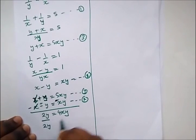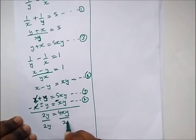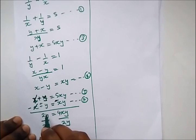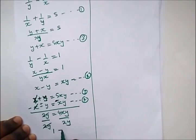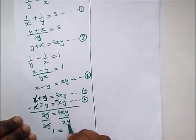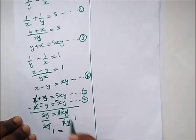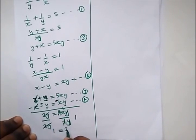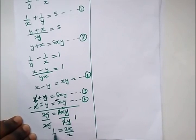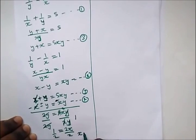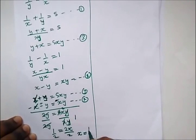From here we divide both sides by 2y. The y cancels, and we're left with 1 equal to 2x. Dividing both sides by 2, we get x equal to 1 over 2.